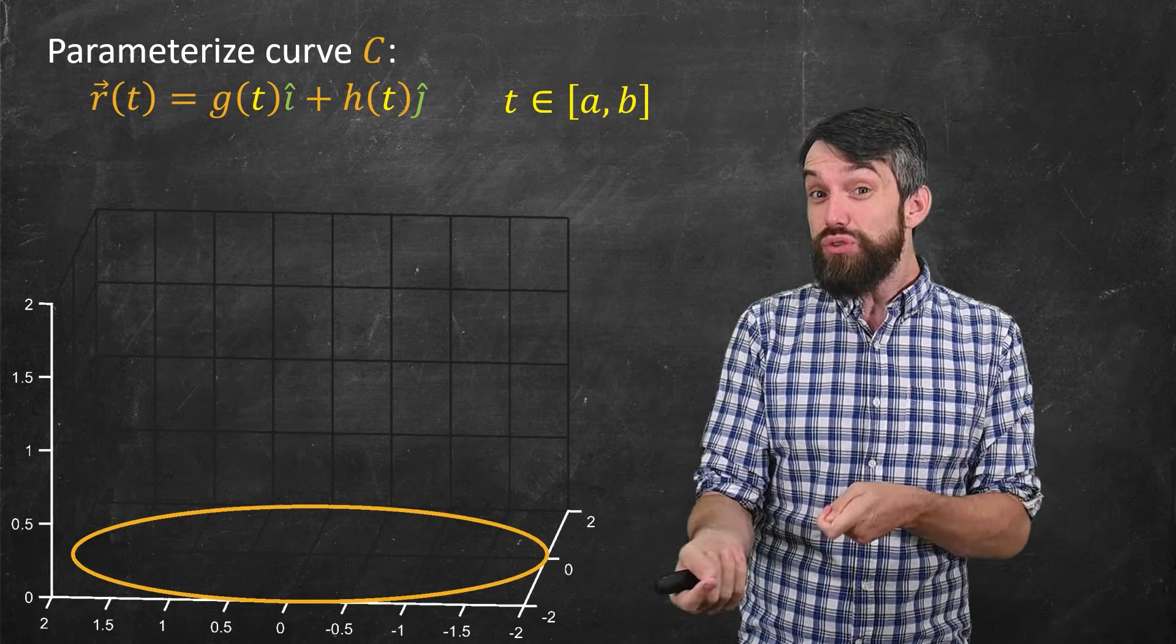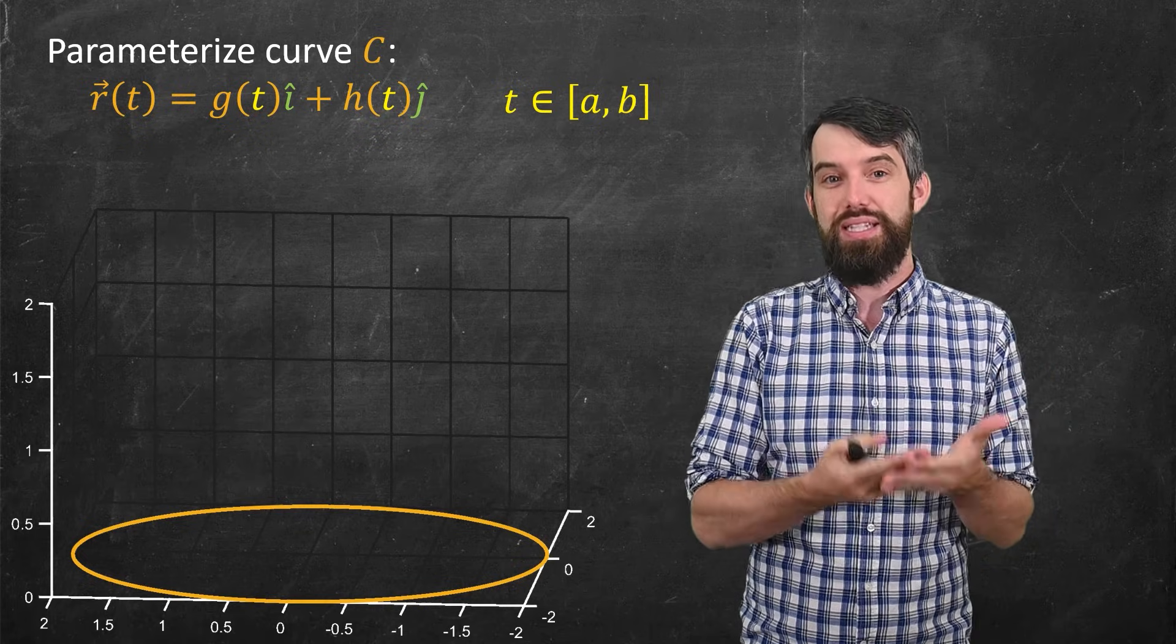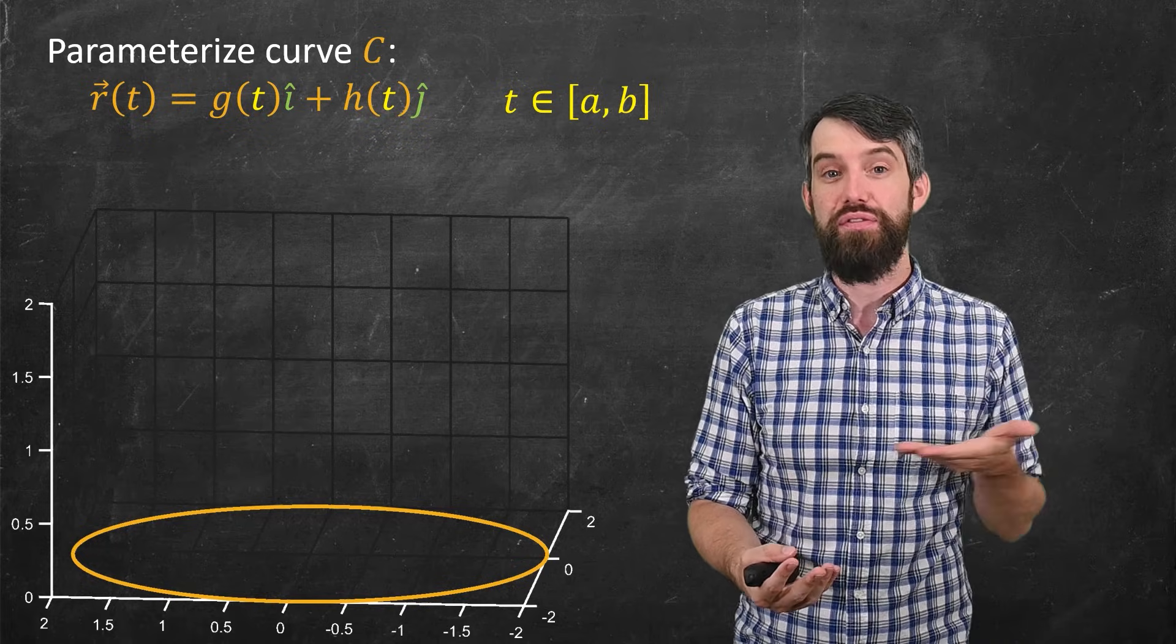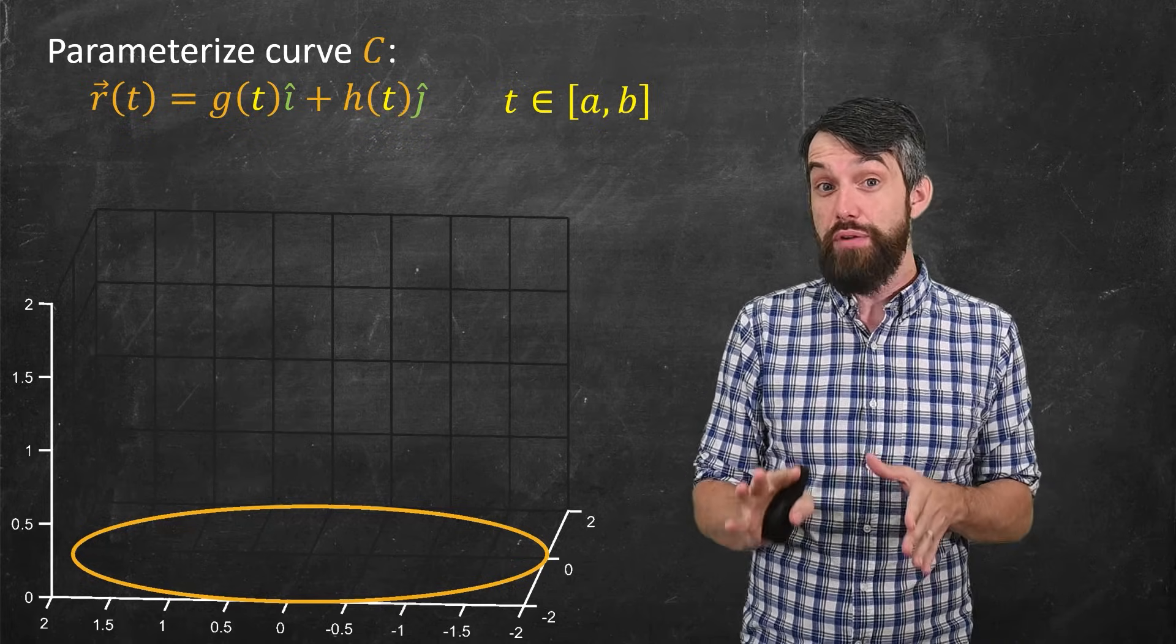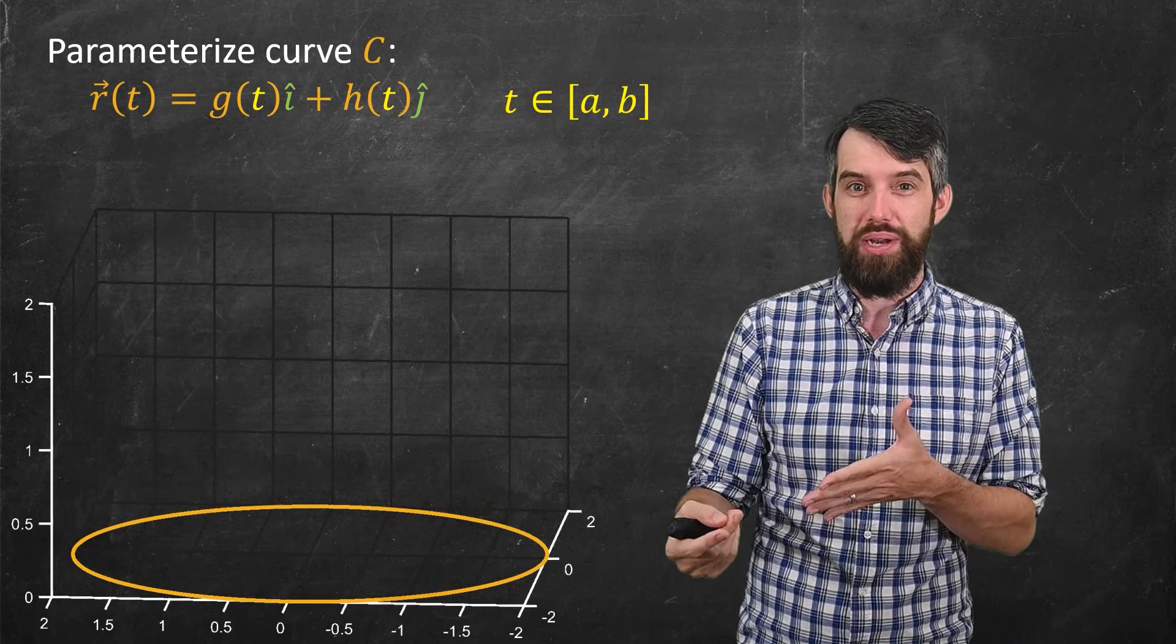In this specific example, my functions might be 2cos(t) in the x and 2sin(t) in the y, and my interval might be 0 to 2π. But you can do this for any curve. The idea of parametrizing something means you've got this single variable input t, but what you get out of it is this two-dimensional thing, this r(t). And indeed, note that the r(t) I've written here is two-dimensional, I don't yet have a third component to it.